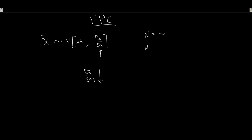For example, if we had a population of N = 50 and pulled out a sample of n = 40, we're sampling almost the entire population. Our x̄ should be very accurate, but our standard errors aren't collapsing fast enough to reflect that. That's where the Finite Population Correction Factor comes in — when sample size approaches population size, we need to correct our standard errors to account for that finite population.